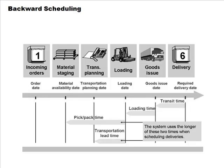When a customer requests delivery on a specific date, SAP uses backward scheduling to determine if that date can be met. Starting from the required delivery date, the system works backward accounting for transit time, loading time, picking time, and so on, to check whether the date is achievable given current stock.